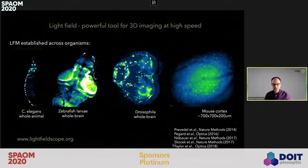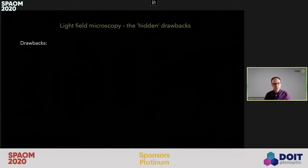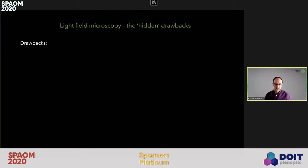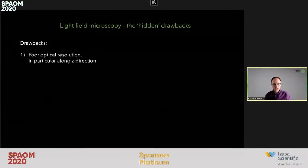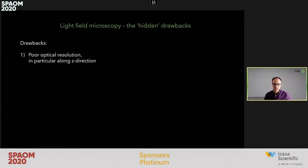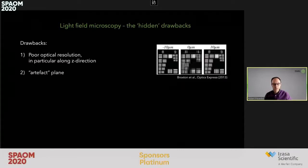We have established light field microscopy as a very powerful tool, but there are always hidden drawbacks. When I moved to EMBL a couple of years ago, I wanted to work on those remaining drawbacks. One is that the optical resolution, although significantly improved, is still fairly poor when compared to light sheet microscopy, especially along the axial direction.